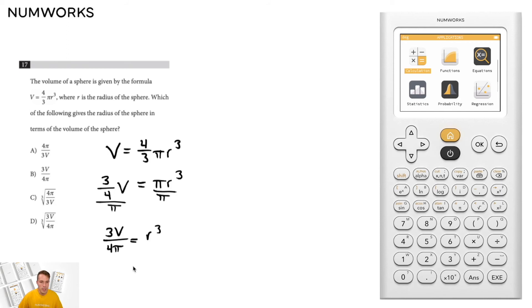To get r by itself, we need to take the cubed root of both sides. This gives us that the radius is equal to the cubed root of three times v over four times pi, option d.